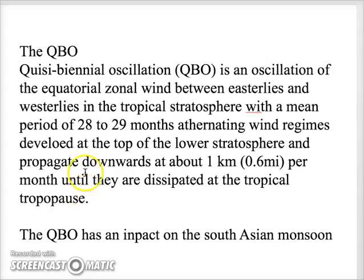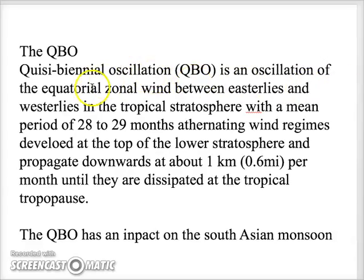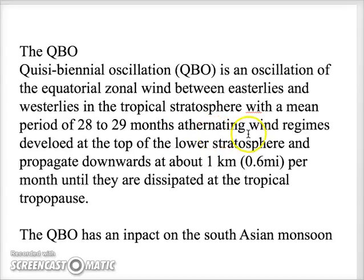Lastly is the Quasi-Biennial Oscillation (QBO), an oscillation of the equatorial zonal wind between easterlies and westerlies in the tropical stratosphere with a mean period of 28 to 29 months. The QBO develops at the top of the lower stratosphere and propagates downwards at about 1 km per month until dissipated at the tropical tropopause. The QBO has an impact on the South Asian monsoon.